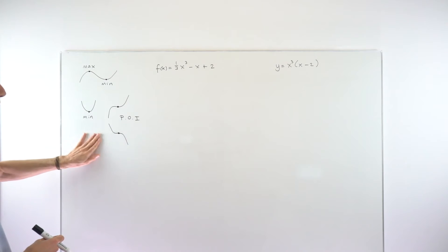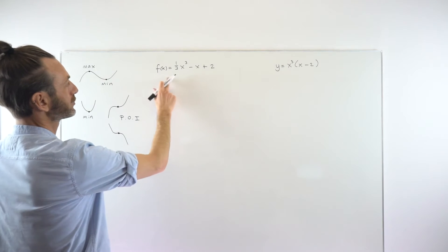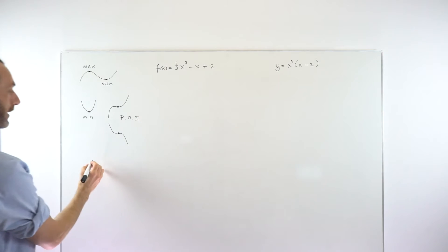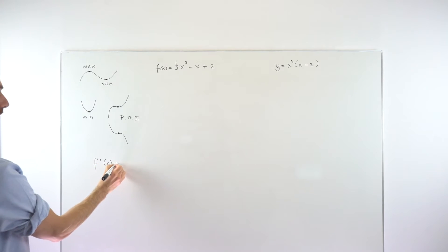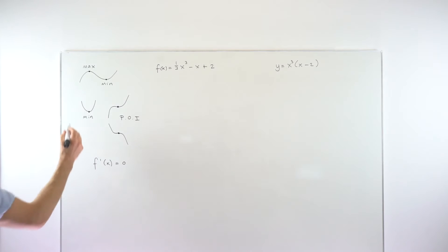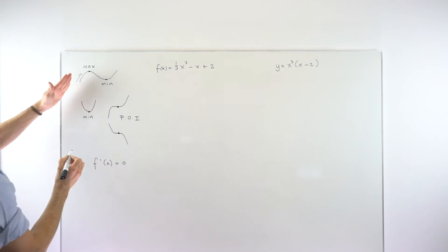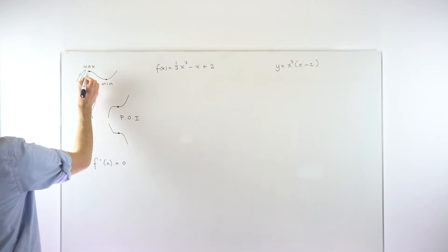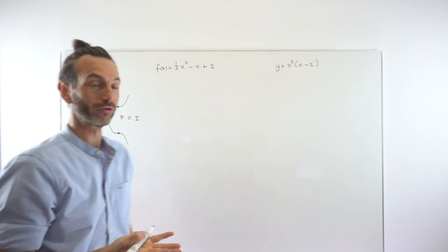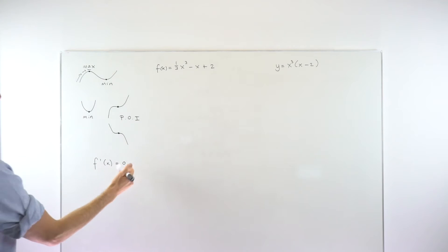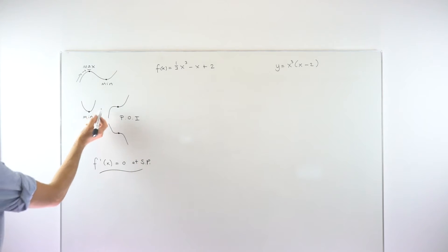So the first thing we're going to do is find the first derivative and use that to find the stationary points. The key fact in this topic is that stationary points occur where the first derivative is equal to zero. If you imagine moving around the curve, the slope is positive going up, then shallows off, and by the time you get to the stationary point, that gradient goes to zero. So the derivative is zero at the stationary points — that's true for all of these.